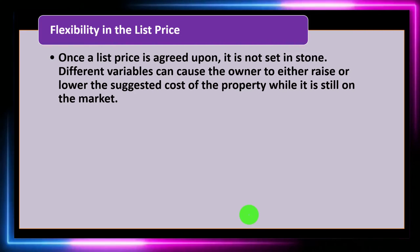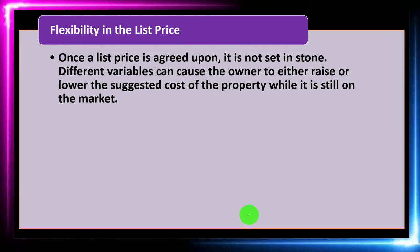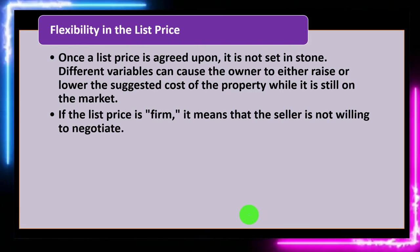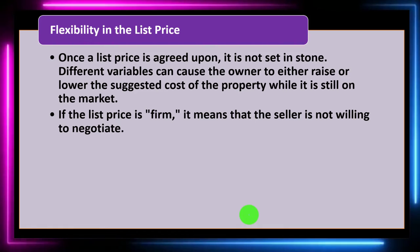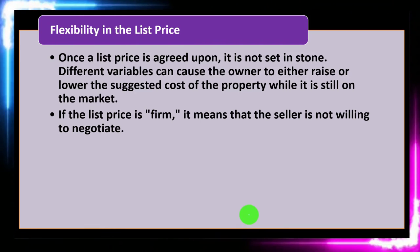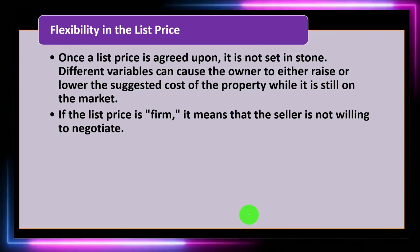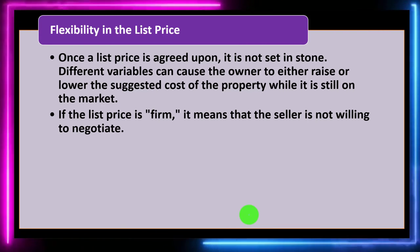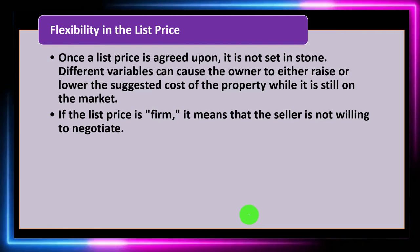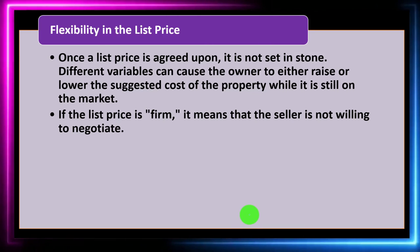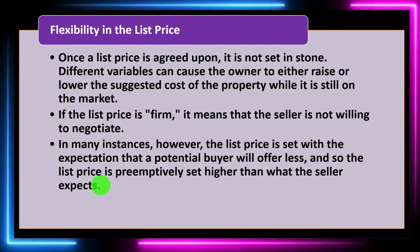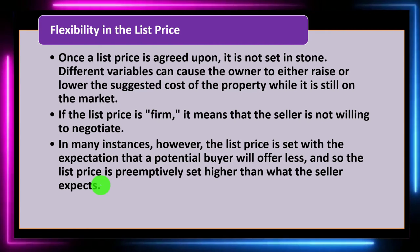Flexibility in the list price: once a list price is agreed upon, it is not set in stone. Different variables can cause the owner to either raise or lower the suggested cost of the property while it is still on the market. If the list price is firm, it means the seller is not willing to negotiate — they don't want to haggle. Or the seller might put the list price out there and be open to negotiations and offers.